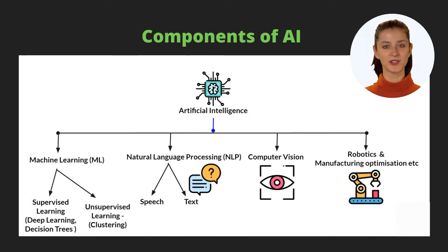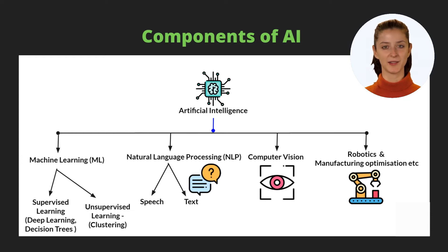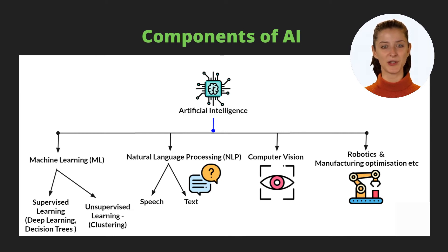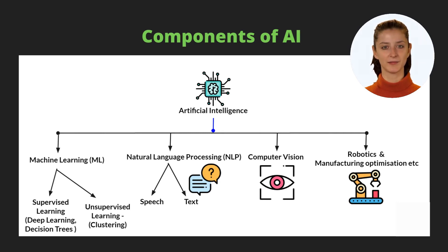Now that you understand AI on a high level, let's go a bit deeper in understanding AI and its different components. In the real world, you hear quite a lot of terms like machine learning, deep learning, computer vision, natural language processing, etc. In this course, we will attempt to demystify all these terms and also see how they fit together.